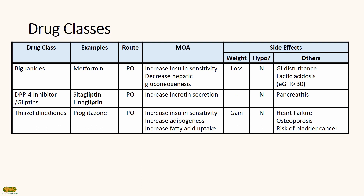Examples of DPP-4 inhibitors, which are also known as gliptins, include sitagliptin. They increase incretin secretion. This drug class has no change in weight and does not cause hypoglycemia. Side effects include pancreatitis.